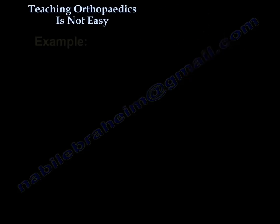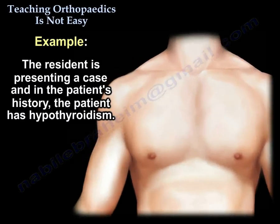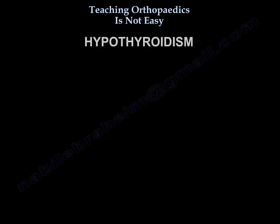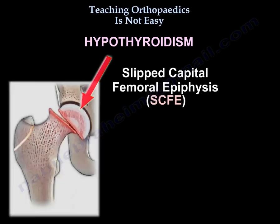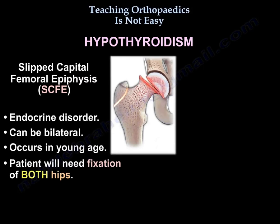And here there is an example. The resident is presenting a case, and in the patient's history, the patient has hypothyroidism. So we take the word hypothyroidism and we expand it. Hypothyroidism can lead to slipped capital femoral epiphysis. The slipped epiphysis from hypothyroidism is an endocrine disorder.